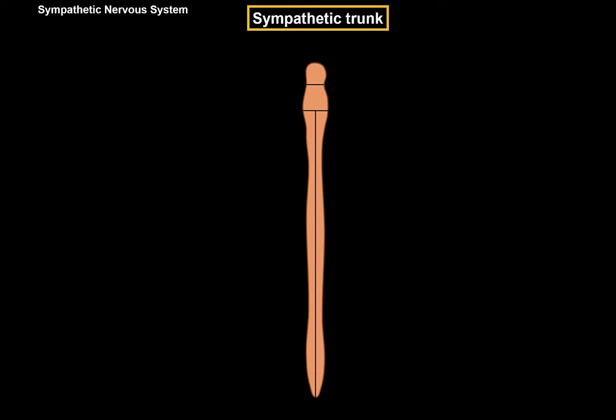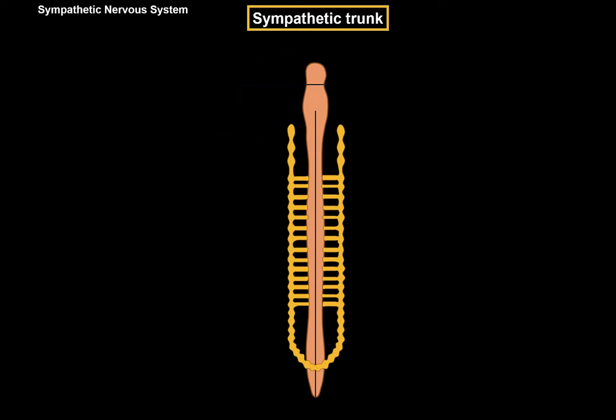Now let's make a scheme for the sympathetic nervous system — just a scheme, not topographically correct, just to make it easier to remember, with lots of variations possible. Here we see the pons, medulla, spinal cord. Laterally to the spinal cord are the paravertebral ganglia — the sympathetic chain or sympathetic trunk. It receives sympathetic fibers from the thoracolumbar area, T1 to L2, though some sources also say C8 to L2 or L3.